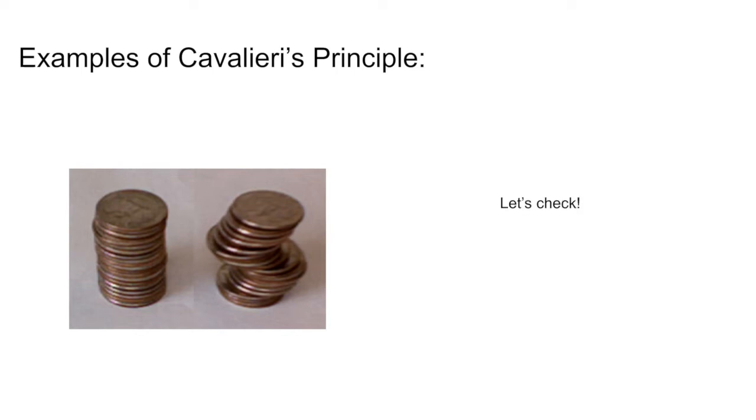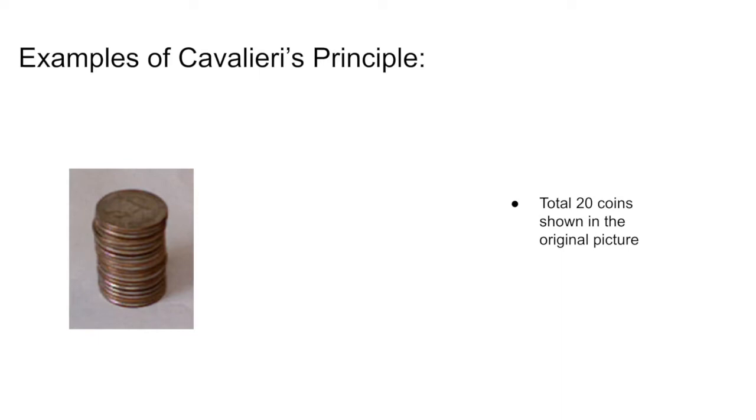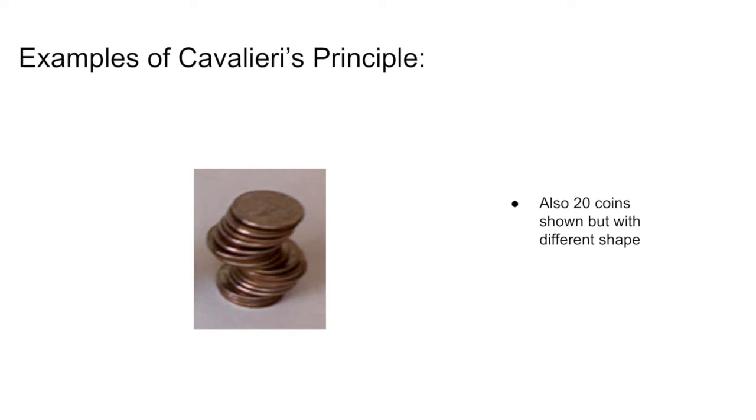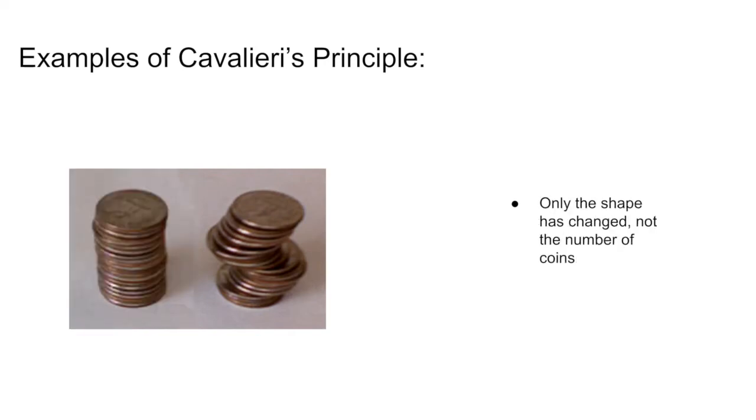Let's check. In the first picture, there were a total of 20 coins shown in the original picture. Also, 20 coins shown but with a different shape in the second picture. Only the shape has changed, not the number of coins, which proves Cavalieri's Principle.